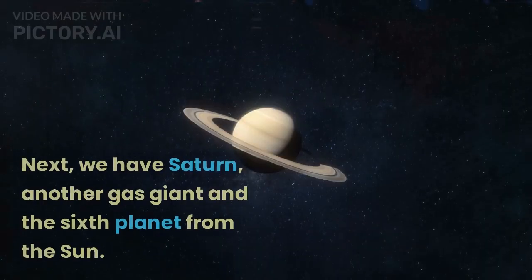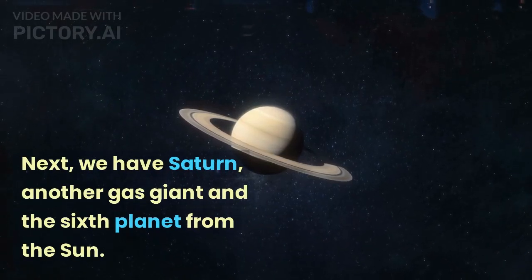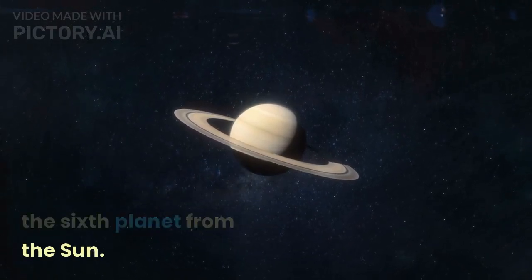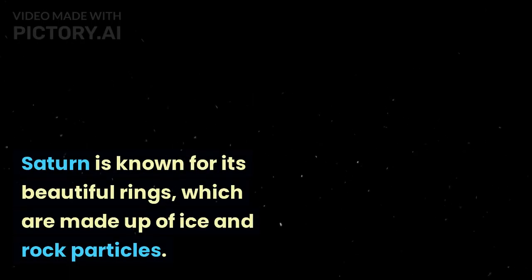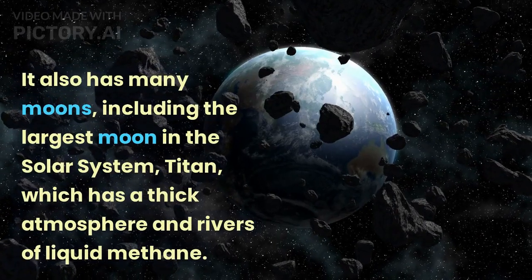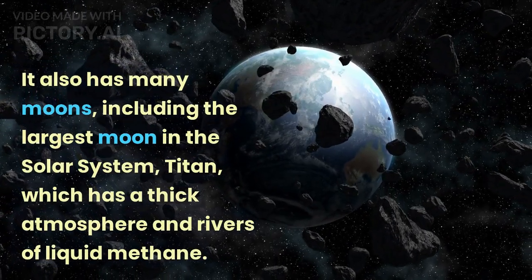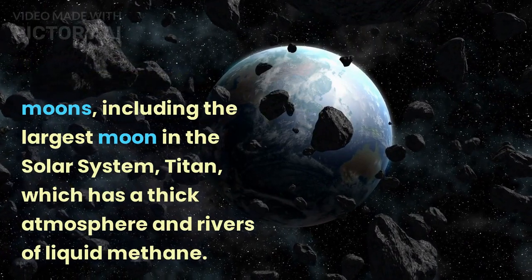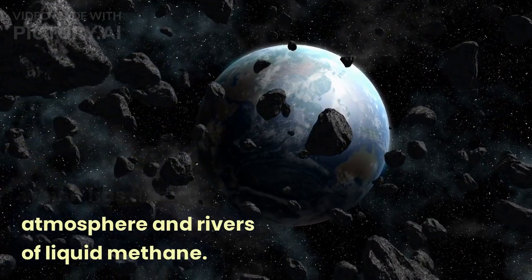Saturn. Next, we have Saturn, another gas giant and the sixth planet from the sun. Saturn is known for its beautiful rings, which are made up of ice and rock particles. It also has many moons, including the largest moon in the solar system, Titan, which has a thick atmosphere and rivers of liquid methane.